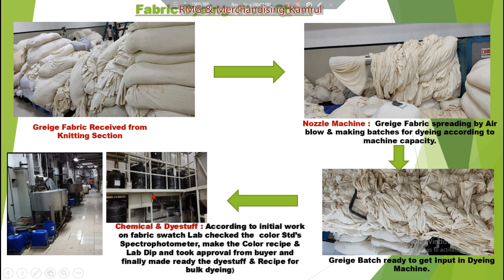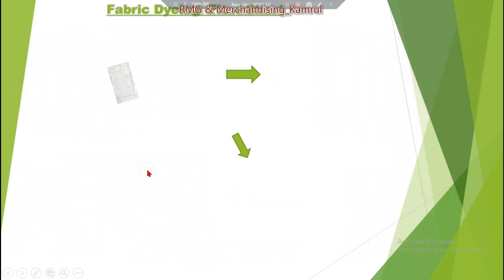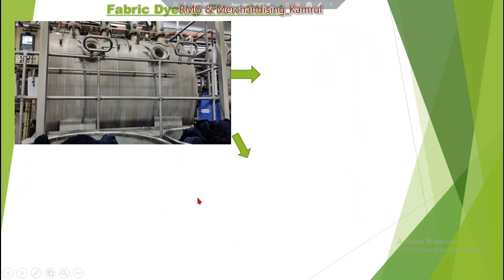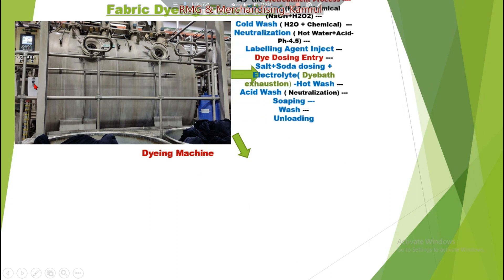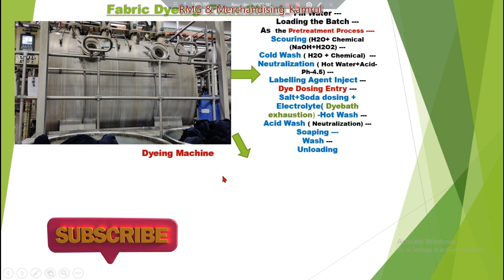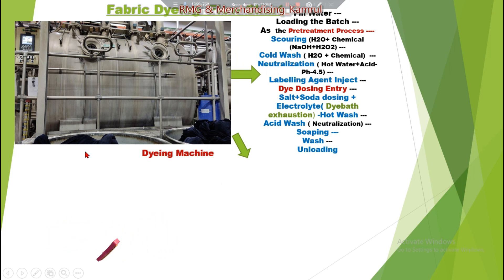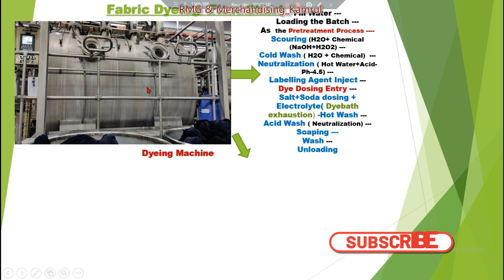According to that recipe, bulk chemicals and dye stuff are prepared, and the fabric goes to the dyeing section. In the dyeing machine, the fabric batch is loaded. The dyeing machine is filled with water, and then the batch — which you can see is already prepared — is inserted into the dyeing machine.